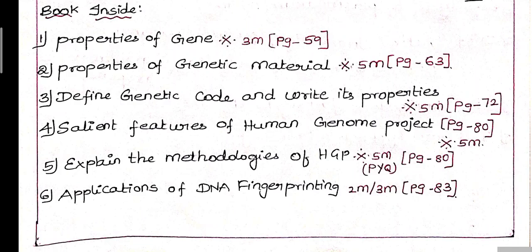Third question: Define genetic code and write its properties. Genetic code definition and properties have 10 points total, so write 6 to 7 points. Important 5-mark question on page 72.